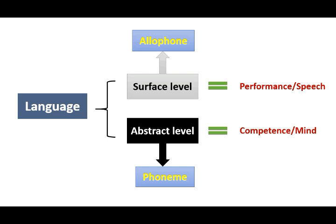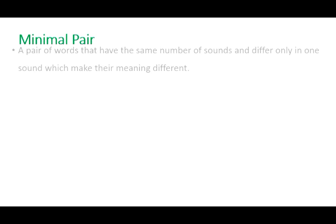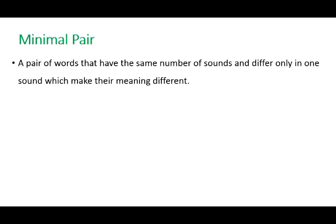The last notion to define in this lesson is the minimal pair. A minimal pair can be defined as a pair of words that have the same number of sounds and differ only in one sound, which makes their meaning different. For example, there are several words in English that make minimal pairs.